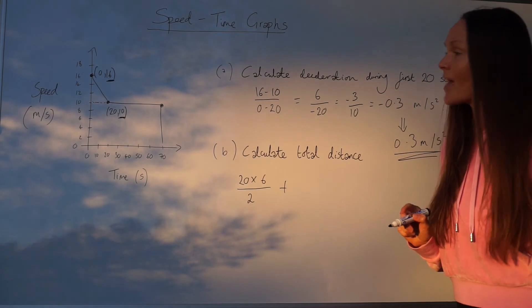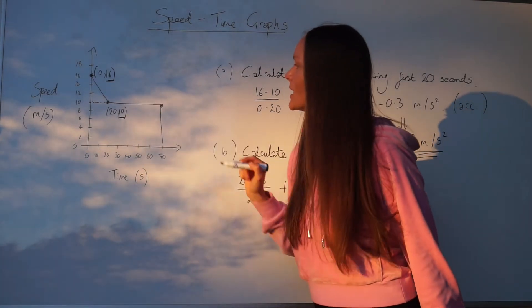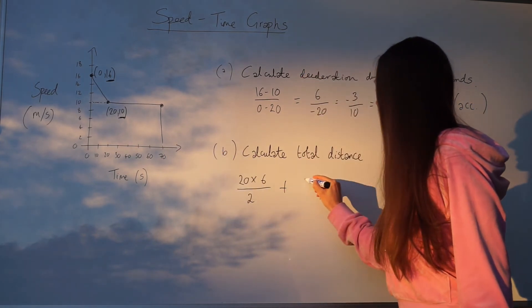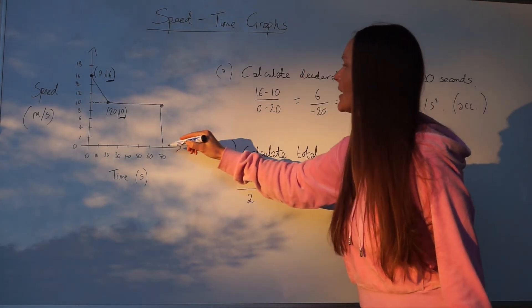Then I'm going to add on the area of this big rectangle here. So base times height. The base being 70 and the height being 10.